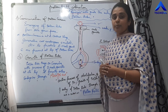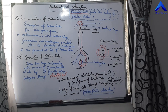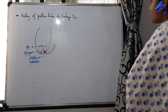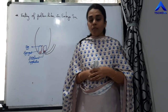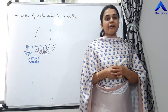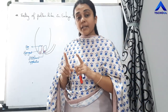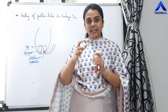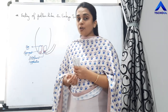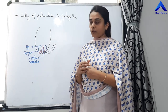Now we are going to study about fertilization. Pollen-pistil interaction is the series of events beginning from the deposition of the pollen grain on the stigma, germination of the pollen grain by formation of the pollen tube, growth of the pollen tube, and entry of the pollen tube into the ovule.